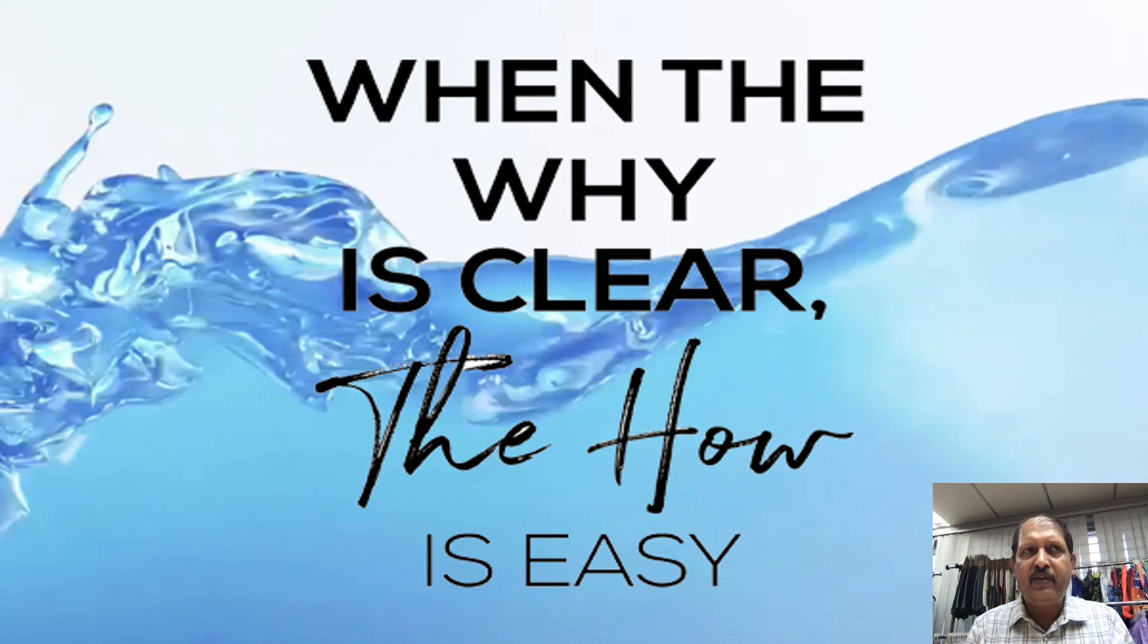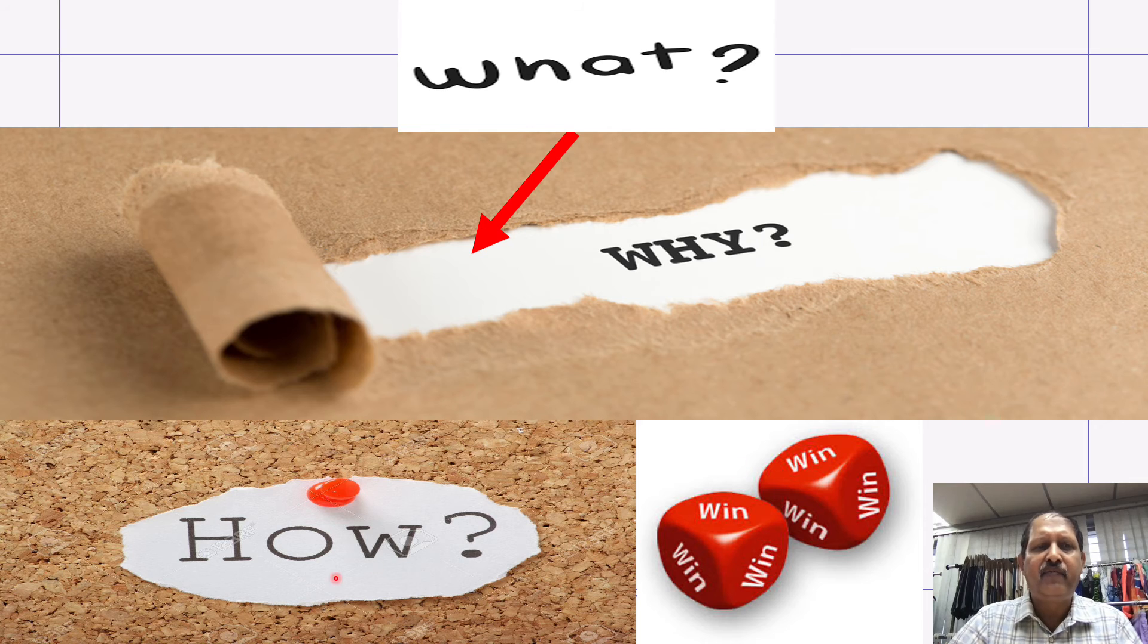Or why somebody is behaving in some particular manner with us? Why is he behaving like this? We generally have a habit of concentrating on the what, the prima facie. Suppose if some person is behaving rudely with you, we only look at he is behaving very rudely with us, but we do not look at why.